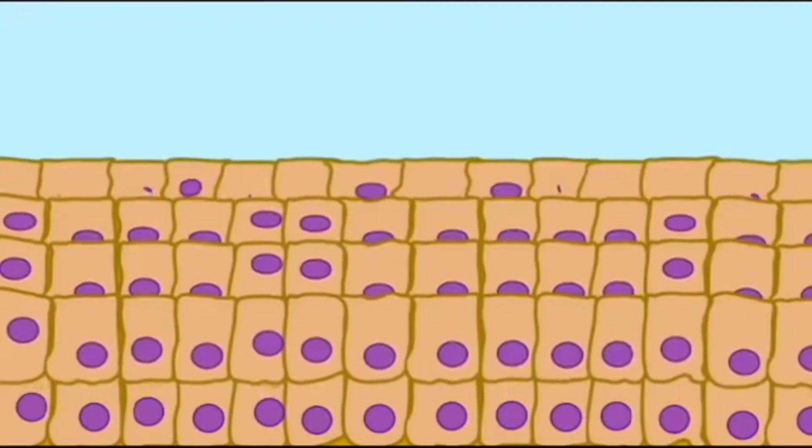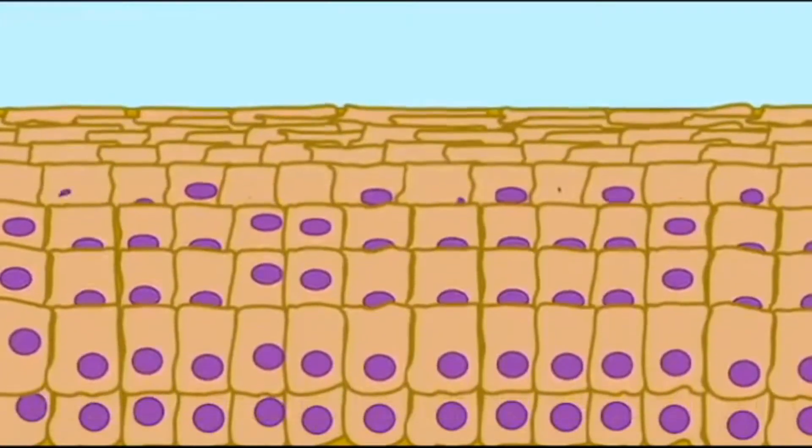Once a cell is pushed up from this basal layer, it produces keratin, a protein found in skin, hair, and nails.